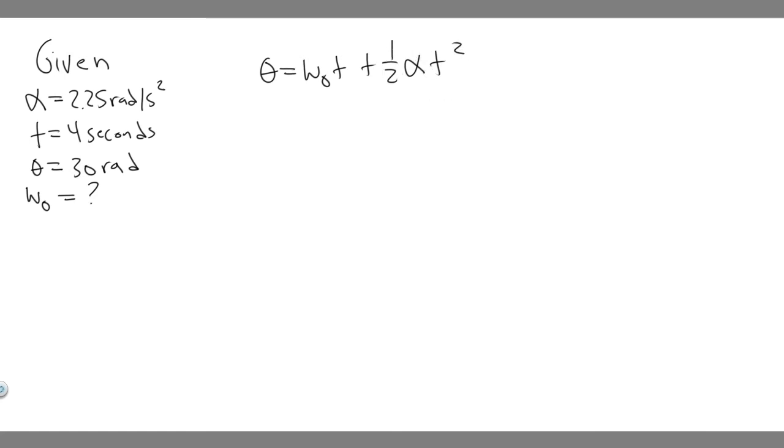So theta times angular velocity times time plus 1 half times angular acceleration times t squared. Notice what we're given: we're given angular acceleration, we're given t, we're given theta, and the only variable left is omega 0 or the angular velocity, which is what we're solving for. So we can just go ahead and plug stuff in and solve. You need to make sure your units are correct though. Angular acceleration is radians per second squared, which is what it needs to be. This needs to be in radians, and then this is going to be in radians per second, and this is in seconds. So all of our units line up, so we can just plug in.